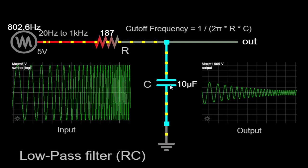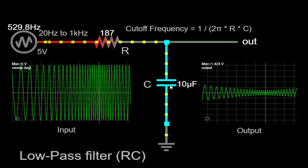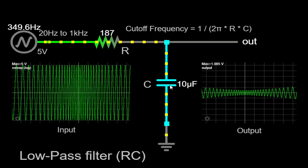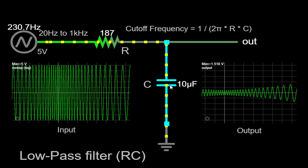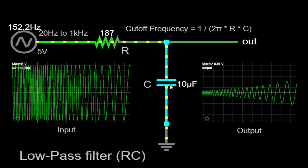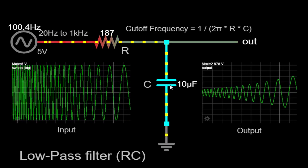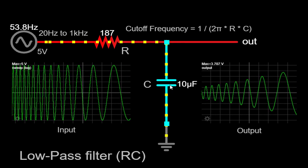At low frequencies, the capacitor has sufficient time to charge and discharge fully during each cycle of the input signal. As a result, it behaves as a relatively short circuit for these frequencies, allowing the signal to pass through with minimal attenuation.